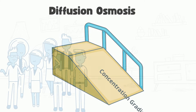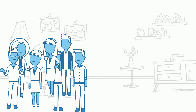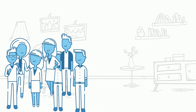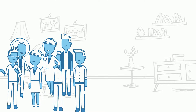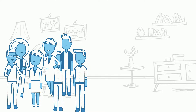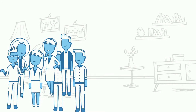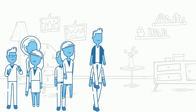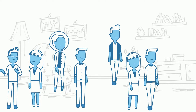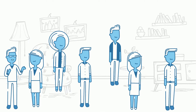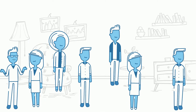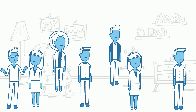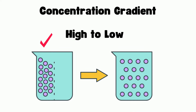Imagine you're in a room and everyone is standing in one corner. If given the opportunity, people will naturally move from where there are lots of people to where there are fewer people. That's basically what a concentration gradient is all about — things tend to move from where there's lots of them to where there's not so many.